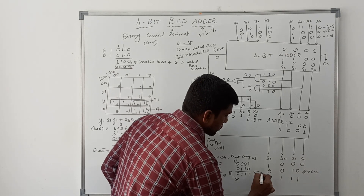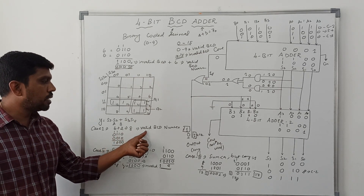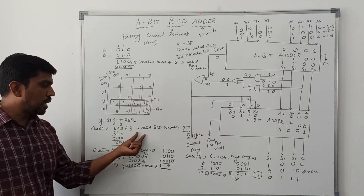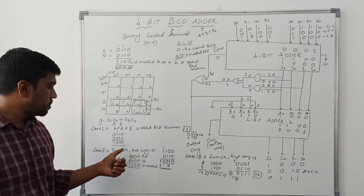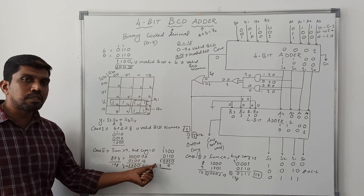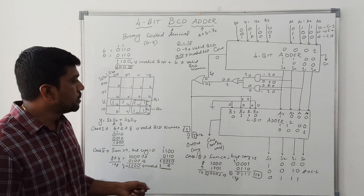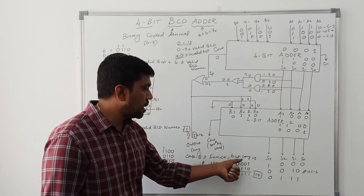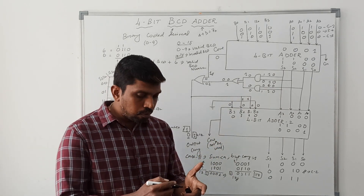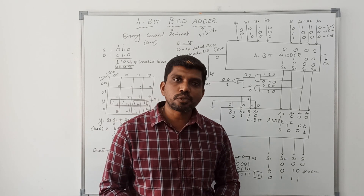In summary, the 4-bit BCD adder has three cases. Case 1: sum is 9 or below — it is a valid BCD number and no correction needed. Case 2: sum is greater than 9 but carry equals 0 — invalid BCD, add 6 to correct. Case 3: sum is less than 9 but carry equals 1 — also invalid BCD, add 6 to correct. I hope you understand the concept. If you are watching for the first time, please subscribe and support us. Thanks for watching.